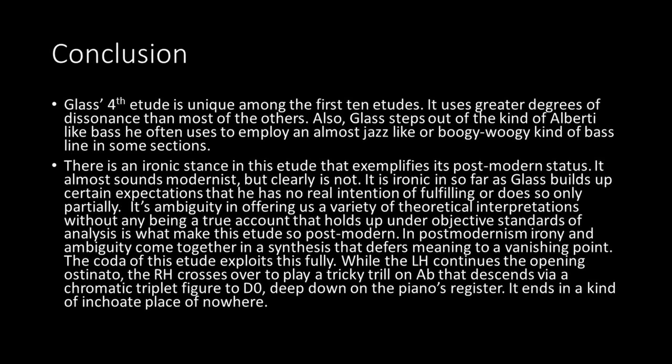Conclusions: There is an ironic stance in this etude that exemplifies its postmodern status. It almost sounds modernist, but clearly is not. It is ironic insofar as Glass builds up certain expectations that he has no real intention of fulfilling, or does so only partially. Its ambiguity — in offering us a variety of theoretical interpretations without any being a true account that holds up under objective standards of analysis — is what makes this etude, to my ears and eyes, postmodern. In postmodernism, irony and ambiguity come together in a synthesis that defers meaning to a vanishing point. The coda of this etude exploits this fully. While the left hand continues the opening ostinato, the right hand crosses over to play a tricky trill on A-flat that descends via a chromatic triplet figure to D, deep in the piano's register. It ends in a kind of inchoate place of nowhere, as much postmodern thought takes us.